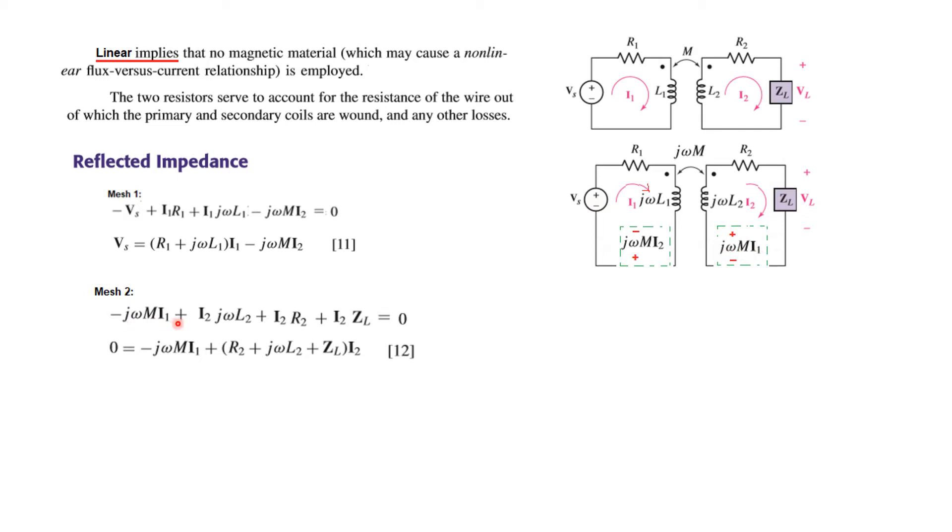For mesh 2, this current is touching this terminal first, so it will become positive. So positive j omega L2 I2, then positive I2 R2, and positive I2 ZL. Taking I2 in common, this is our second equation.